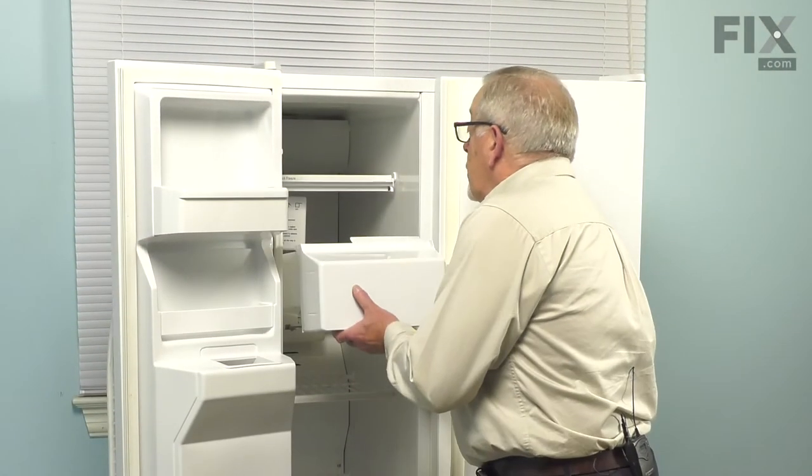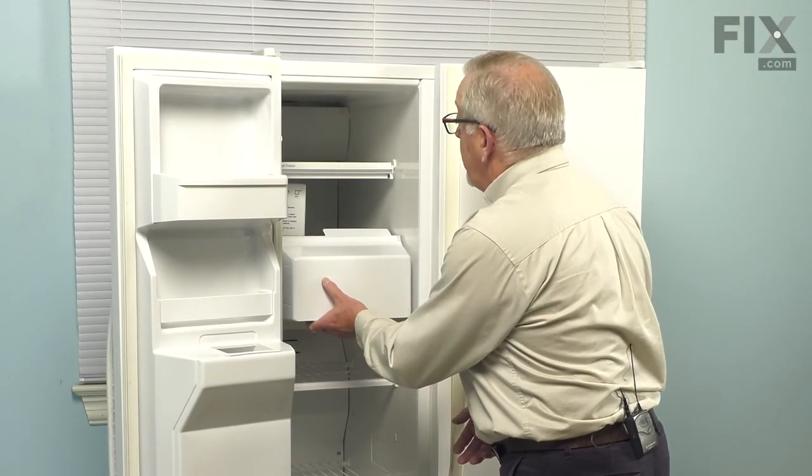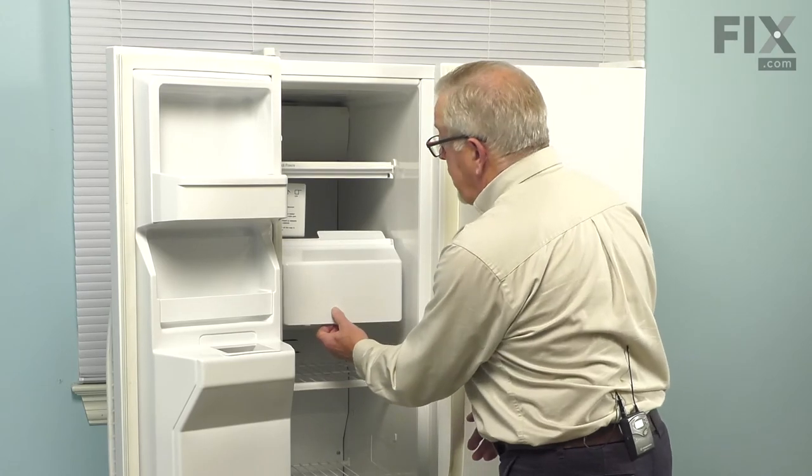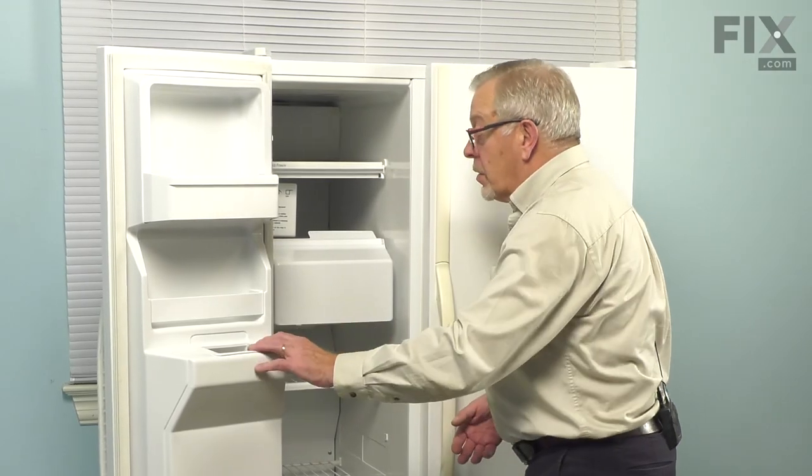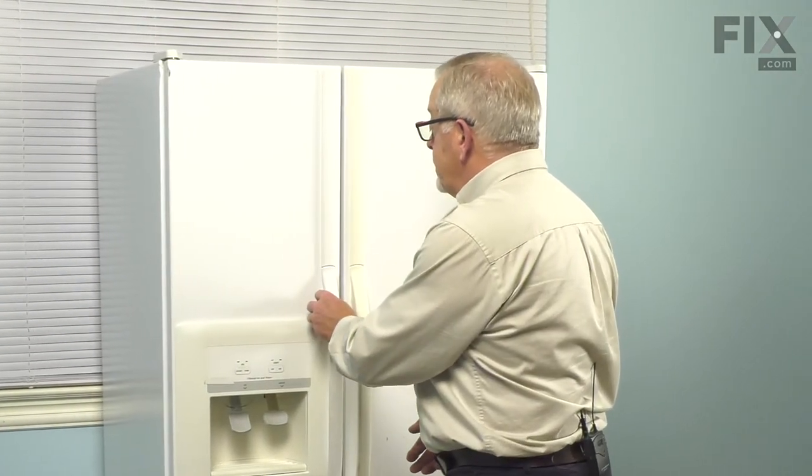Simply place it on the rails, slide it back till it drops down into position, and you can close up the door. Now that we have the bin installed, your repair is complete.